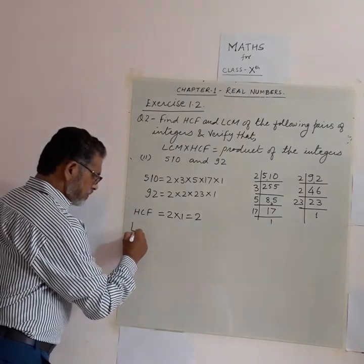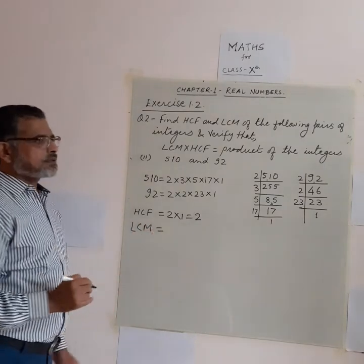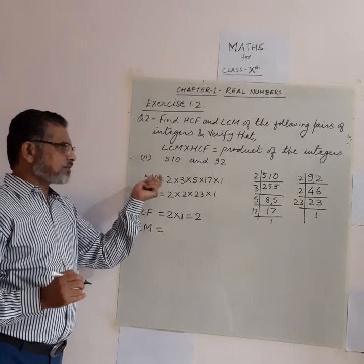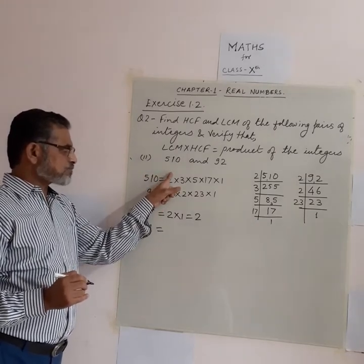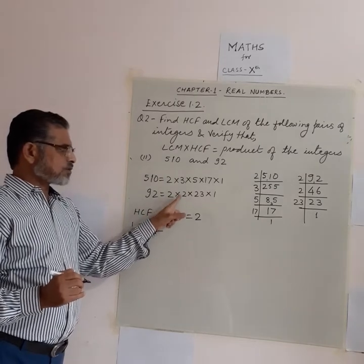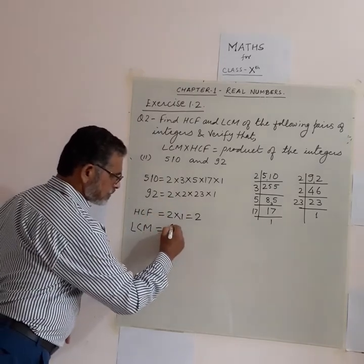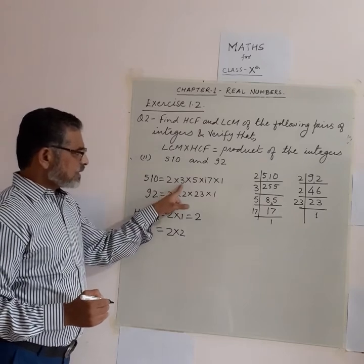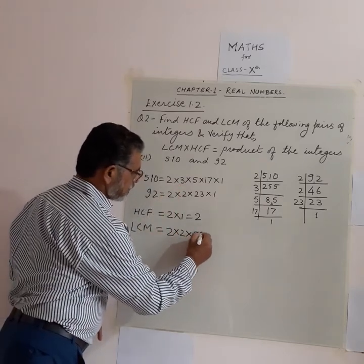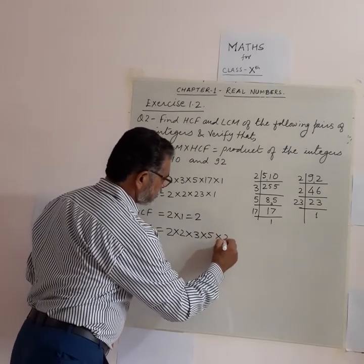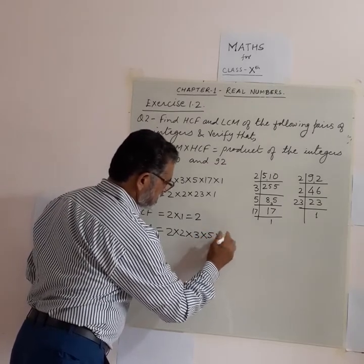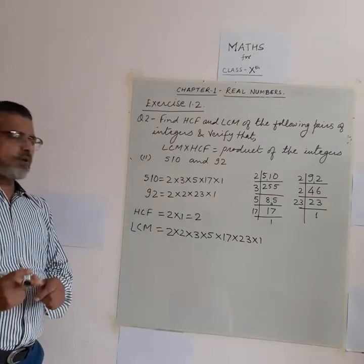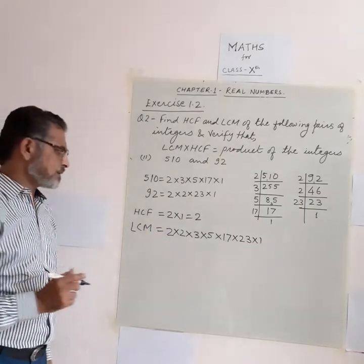To find the LCM, we write each prime factor at its highest power. The factor 2 appears as 2¹ in 510 but as 2² in 92, so we take 2². Then we include 3, 5, and 17 from 510, and 23 from 92. So LCM = 2² × 3 × 5 × 17 × 23.